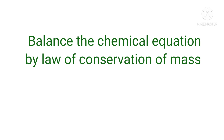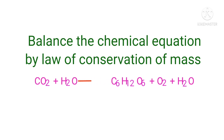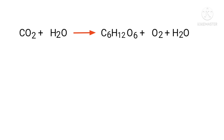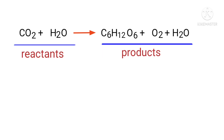Balance the chemical equation by the law of conservation of mass. Carbon dioxide plus water gives us glucose plus oxygen plus water. In this equation, the reactants are carbon dioxide and water, and the products are glucose, oxygen, and water.